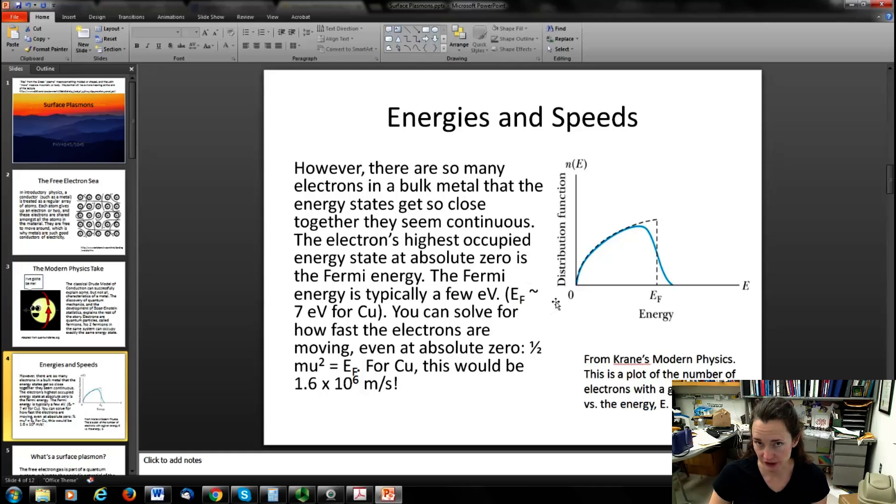Now, within Bose-Einstein statistics, we learn that the electron's highest occupied energy state at absolute zero is called the Fermi energy. And this energy is typically on the order of a few electron volts. For example, for copper, it's seven electron volts or so. Now, if you go above absolute zero, what happens is that this distribution function, which has a hard cutoff at the Fermi energy at absolute zero, it gets rounded off as you go up in temperature. You can use the Fermi energy and you can solve for how fast the electrons are moving, even at absolute zero. So you just do that by taking the kinetic energy expression, one-half, the mass of the electron times the speed of the electron squared, which I symbolize here with u. One-half mu squared, and then you set that equal to the Fermi energy and you solve for your speed.